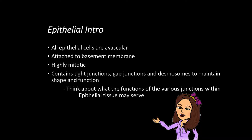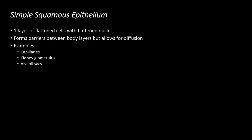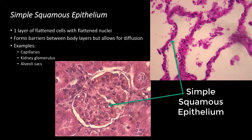Simple squamous epithelium has one layer of flattened cells with small or flat nuclei. The tissue has wispy, sometimes almost imperceptible cytoplasm in its cells. This is because the tissue forms barriers between body areas but allows nutrients, gases, and fluids to pass through. It doesn't use its cytoplasm as a factory to build or store materials, so it doesn't have much of it.